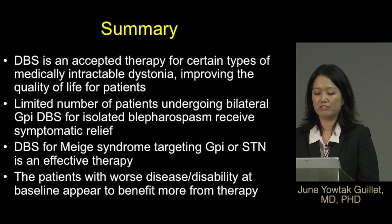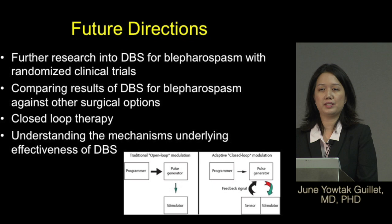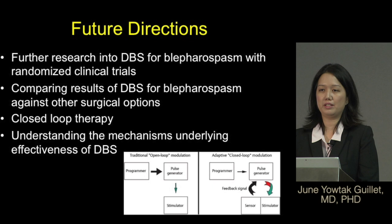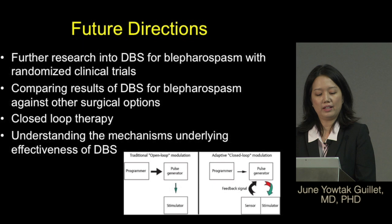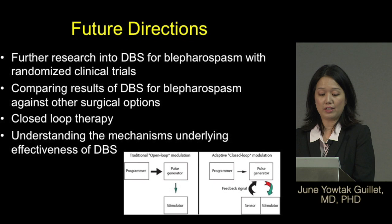Future directions include closed-loop therapy — currently DBS stimulation is always on once activated, but research is underway on closed-loop stimulation that provides feedback and modifies stimulation accordingly. It would also be valuable to have further randomized clinical trials for the treatment of blepharospasm, comparing DBS against other surgical options. And it remains important to better understand the underlying mechanisms of deep brain stimulation's effectiveness. Thank you very much.